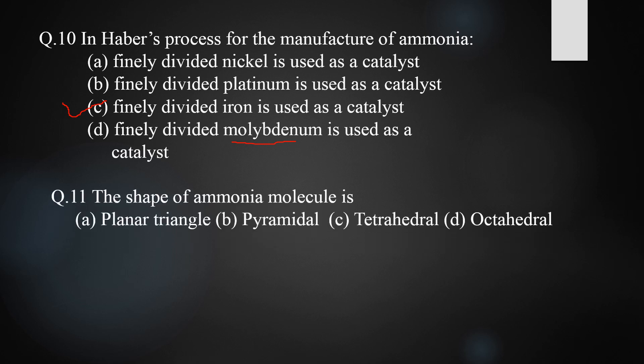Question eleven: the shape of the ammonia molecule is planar triangle, pyramidal, tetrahedral, or octahedral? The correct answer is pyramidal. Ammonia has a pyramidal structure with one lone pair of electrons and three bond pairs combining with hydrogen. The three bond pairs form bonds with hydrogen atoms, and the remaining two electrons act as one lone pair, giving ammonia its pyramidal shape.